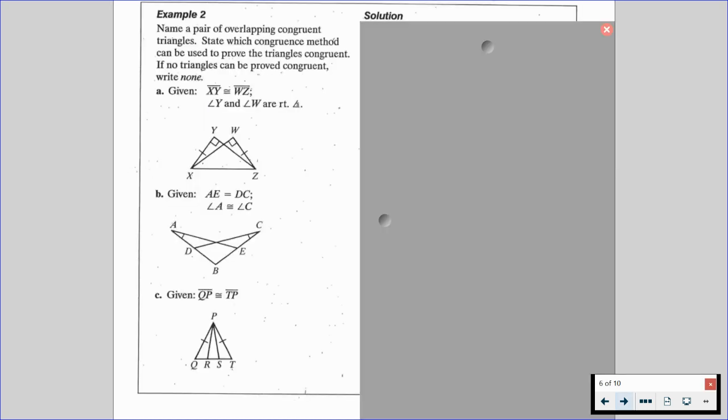So in these examples, we're going to name a pair of overlapping congruent triangles and state the congruence method to be used to prove the triangles congruent. And if no triangles can be proved congruent, we're going to write none. So looking at these three diagrams, we have overlapping triangles, which can get a little bit confusing. Whenever we have overlapping triangles, if we're able to, we definitely want to rewrite it to have two separate triangles. That way we can annotate and mark it up as we go on and it's a little easier for us to visualize.